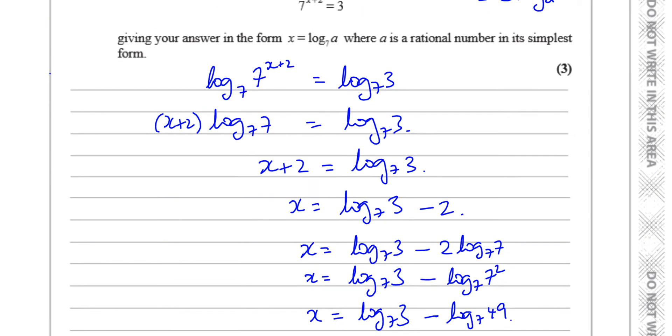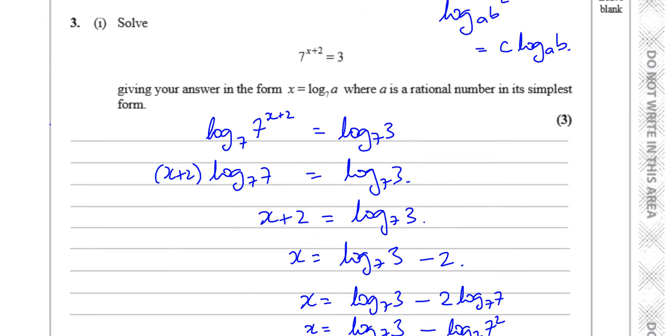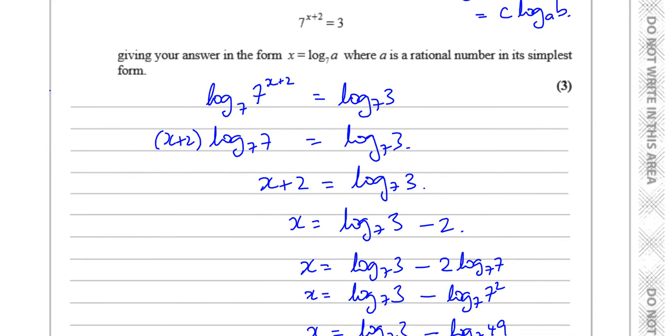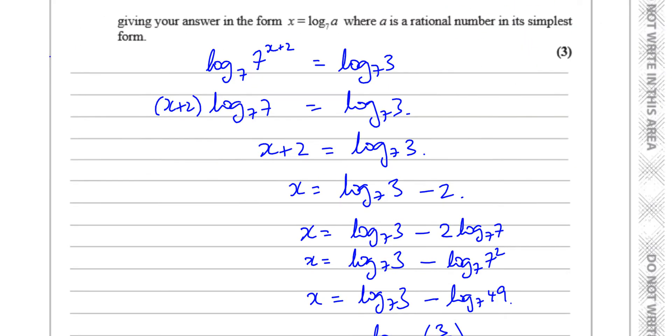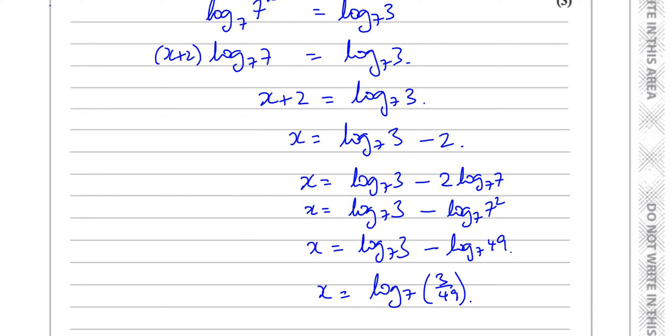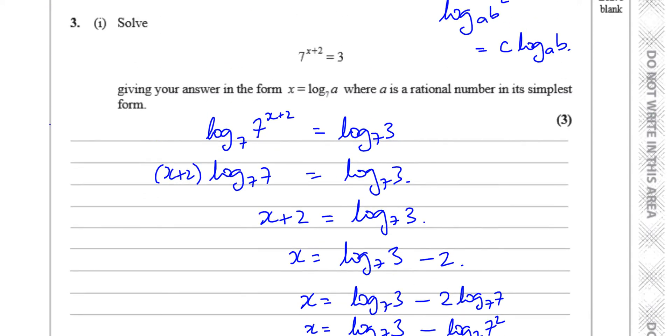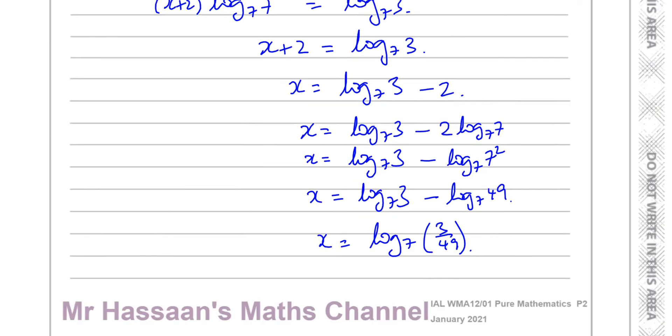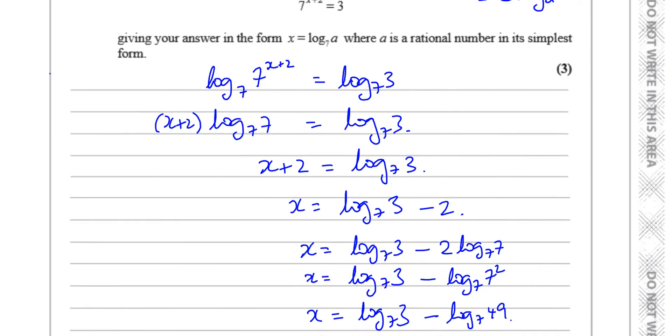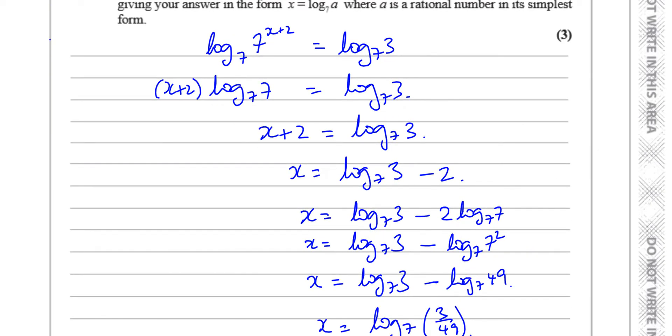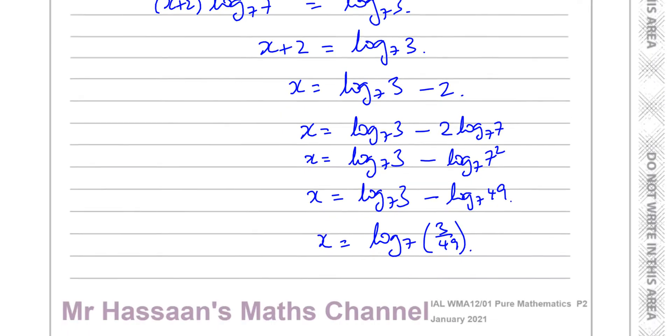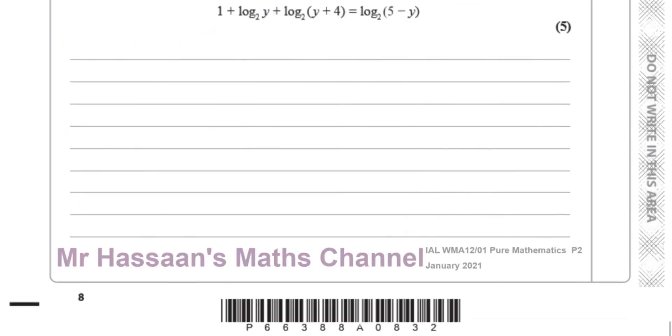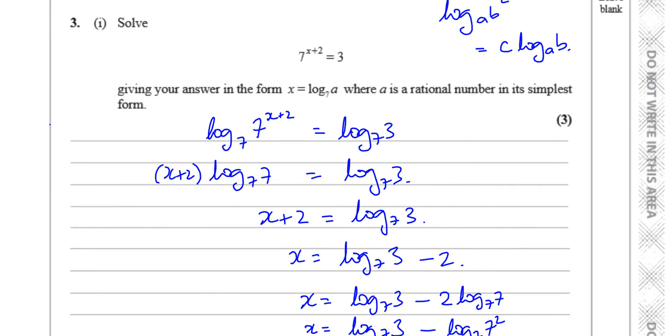So it looked a bit quicker than it actually was because of the way they want us to express the answer. If it just said solve this, then I could have left this in my answer. But it says in the form x equals log to the base 7a, where a is a rational number in its simplest form. So this is what we've done here. We had to continue from here and we had to put the log to the base 7, 7 back there so that we can combine these two eventually using the power law. So there we have the answer to question number 3, part 1.